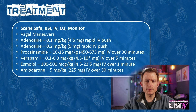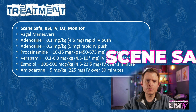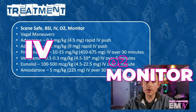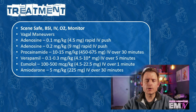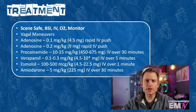I'll begin treatment just like I do for all my other cards, by regurgitating the mantra: scene safe, BSI, IV, O2, monitor. Now as this patient is stable, the next thing I will attempt to do is elicit a vagal maneuver. If this fails, I'll move on to pharmacological interventions. The first line medication, and the gold standard in the treatment of SVT in all age groups, is adenosine.